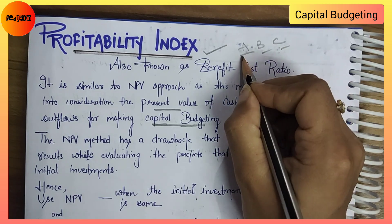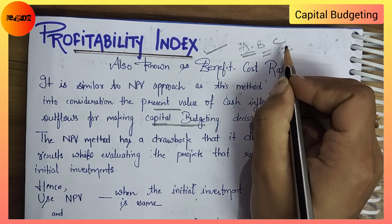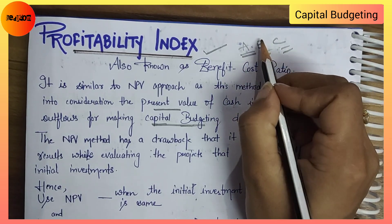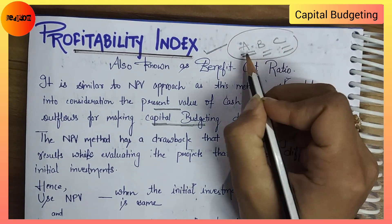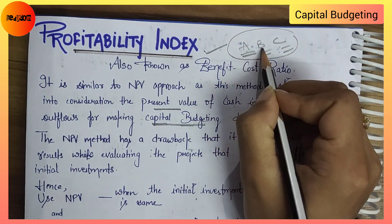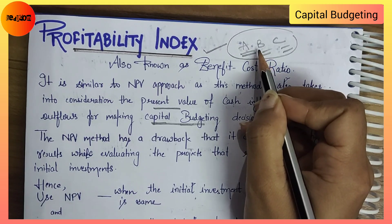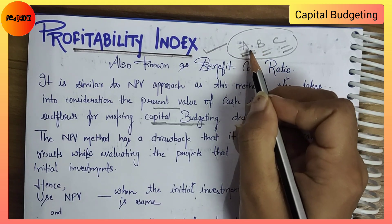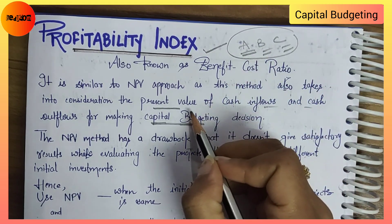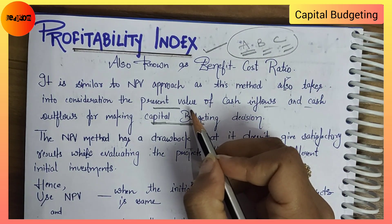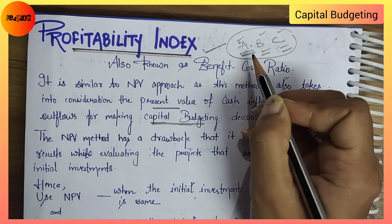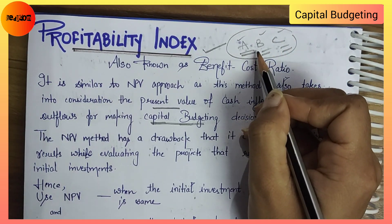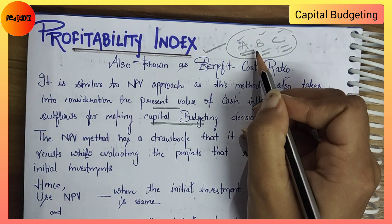We have a decision regarding which projects to evaluate. We will evaluate three projects and choose one project for investment purposes. This process of analyzing different investment opportunities and choosing the best one is called capital budgeting decision.